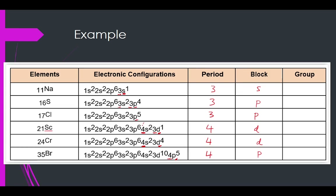One important thing: sometimes a configuration ending in 4s1 also has an incomplete 3d orbital. Even though you see S at the end, if there is a partially filled D orbital present, the element is actually in D block — not S block. For a simple 3s1 without any D orbital, it is S block. So be careful when a D orbital is present.